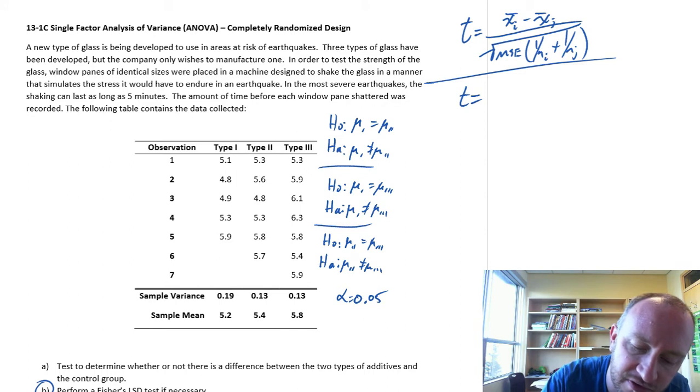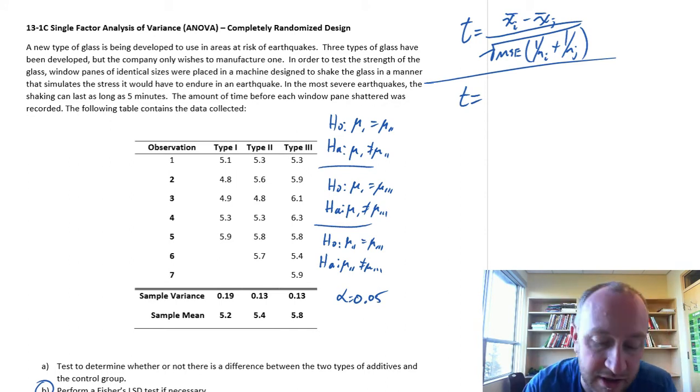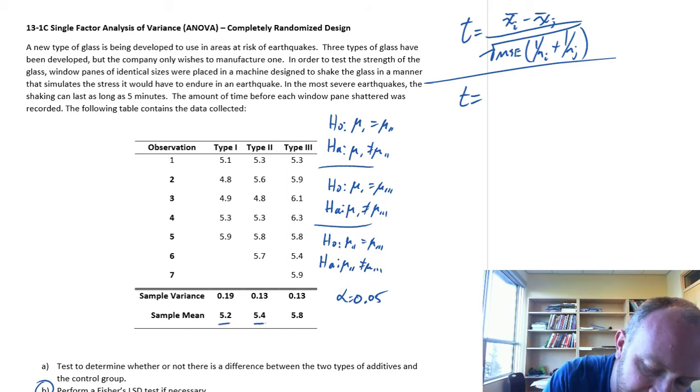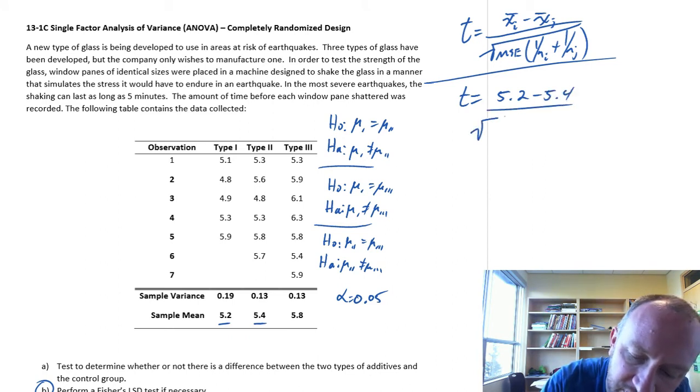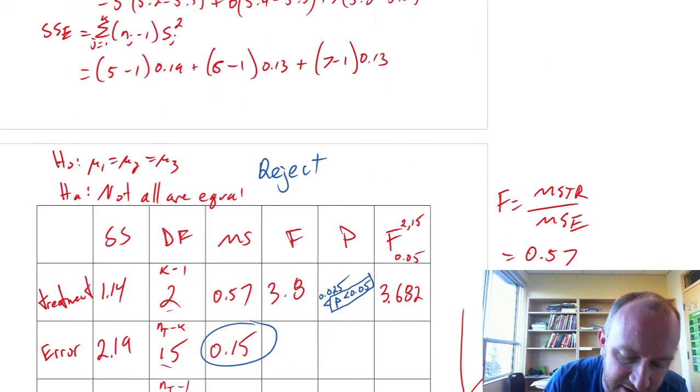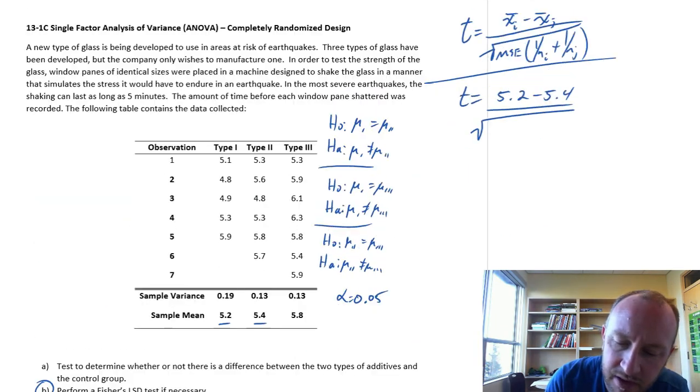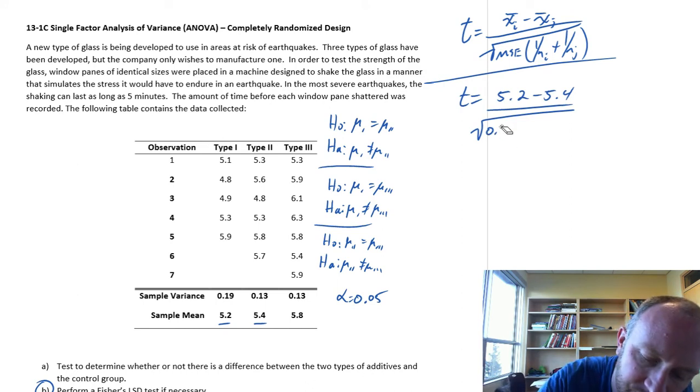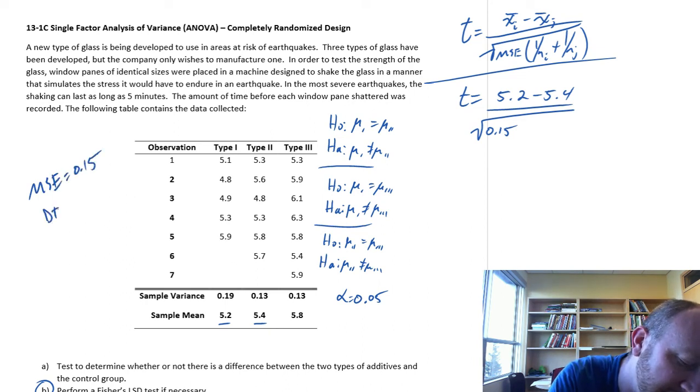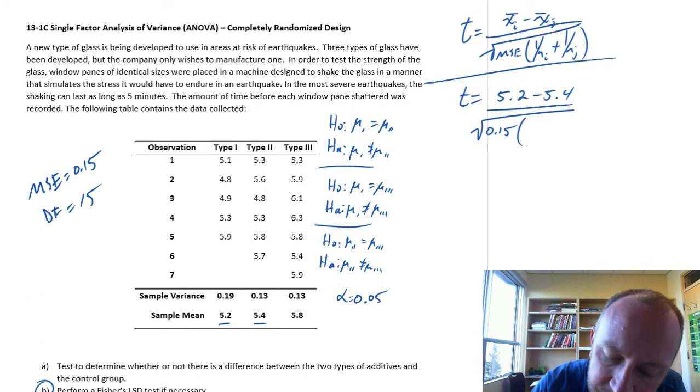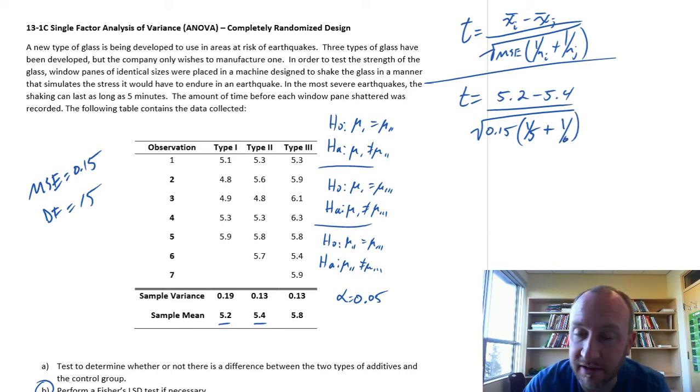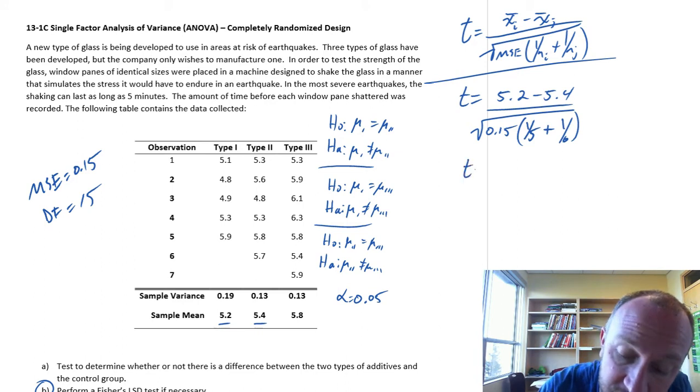So let's get through this and we'll calculate here our test statistics, one for each pair. So for the first one, I'm comparing populations one and two, or treatments one and two. So I'm looking at these two means here. So this is 5.2 minus 5.4 divided by our MSE, we steal that from down here, 0.15. We'll also need these degrees of freedom for the T distribution. So MSE 0.15, and its degrees of freedom is 15 for our T distribution. And this is 1 over 5 and 1 over 6. Those are our two sample sizes for those two populations, those two treatments.